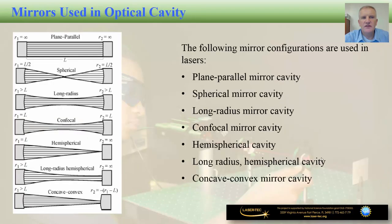Here we have an overview of different types of mirrors used in optical cavities in lasers. There are multiple configurations you may come across: a plain parallel mirror cavity, spherical mirror cavity, long radius mirror cavity, confocal hemispherical, long radius hemispherical cavity, and concave-convex mirror cavities. In this lecture we are not going to explain the advantages and disadvantages of each — that will be the subject of course four — but just remember that mirrors in a laser can come in various shapes and sizes, each with specific advantages for a given laser type or application.